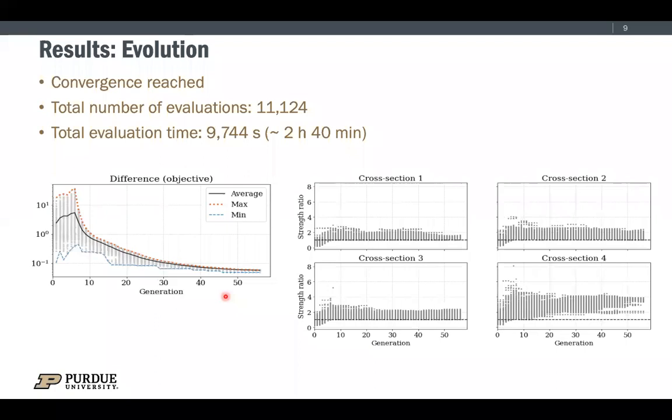This is the results of the optimization. On the left picture shows the convergence plot. As you can tell, this problem can converge to the optimum results. The right four pictures show the constraints of the four cross-sections. These plots show that all of them satisfy the constraint. The total number of evaluations are around 11,000. The total evaluation time is about 2 hours and 40 minutes, which is very efficient.